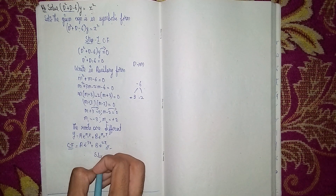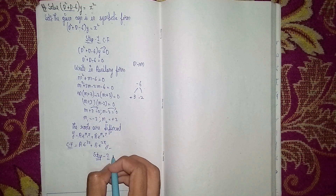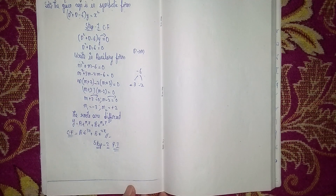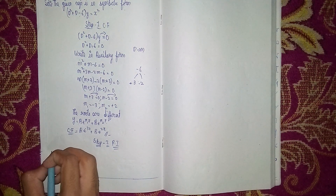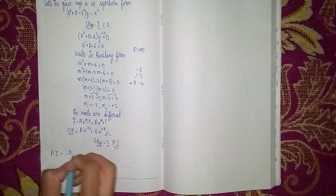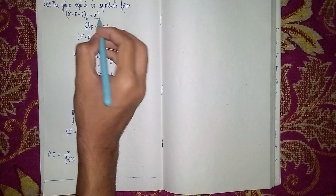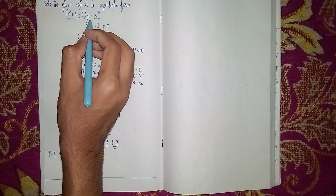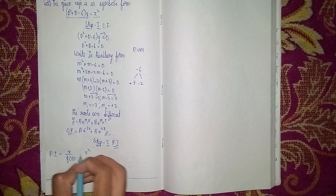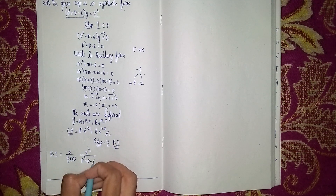Step 2 is to find the particular integral (PI). PI = x/f(D), where x here is x² and f(D) is the operator D² + D - 6. So PI = x² / (D² + D - 6).